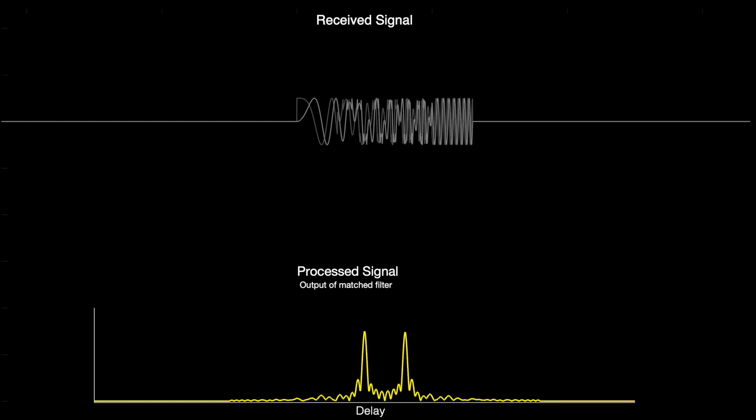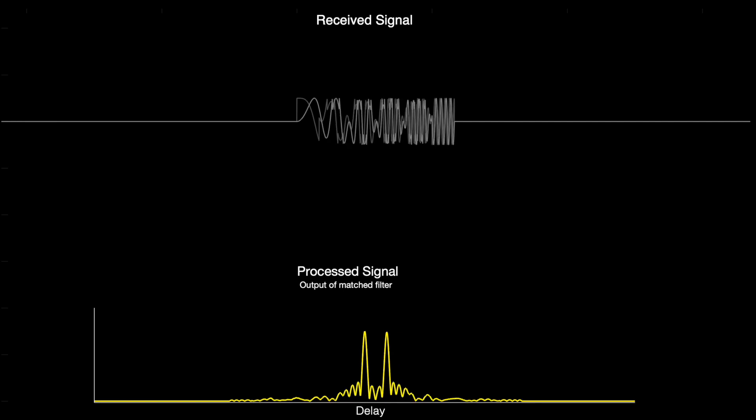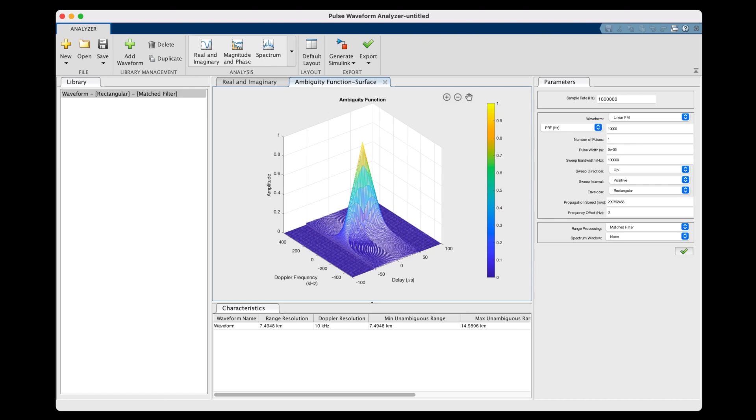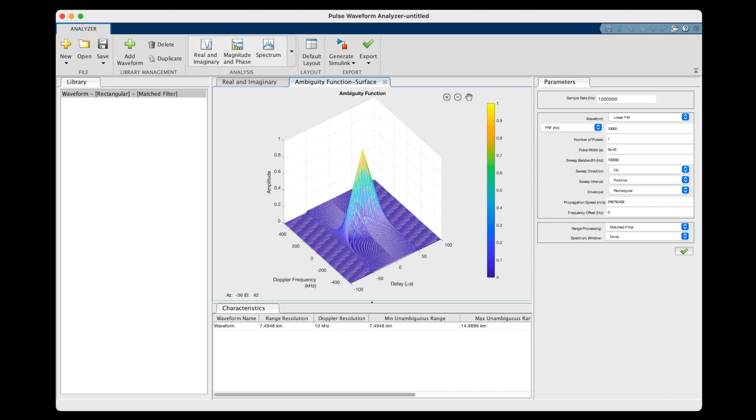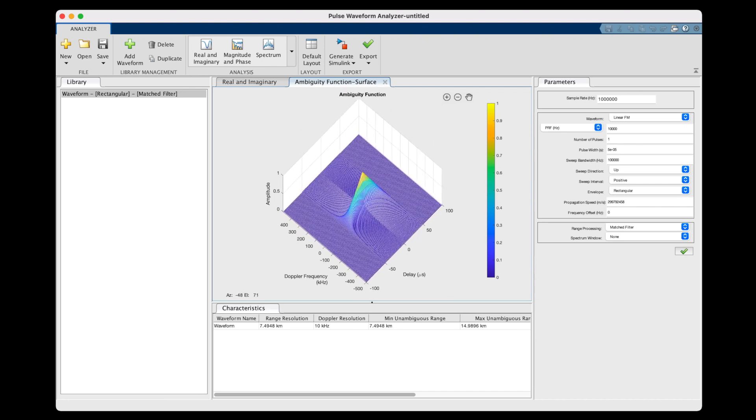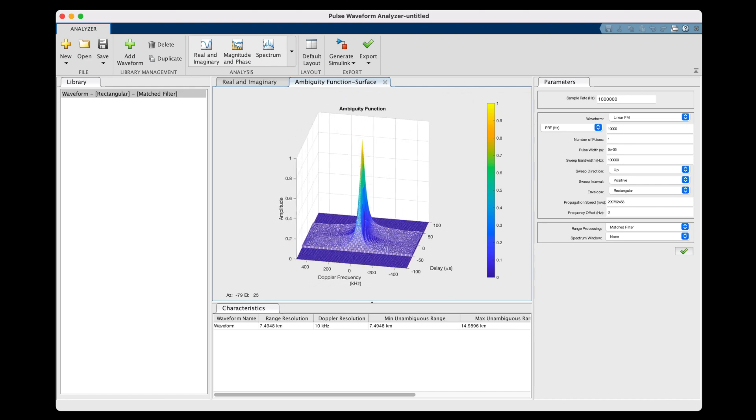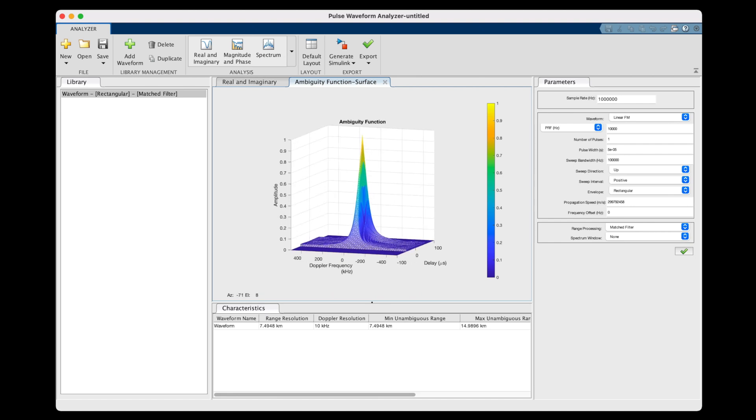Now, this is the good part of LFM waveforms, but there is something else that I need to explain about them. And that is that they generate a coupling between range and Doppler. And to understand this, we need to look at the ambiguity diagram, which I'm going to build up slowly. So hopefully it'll make a lot more sense by the time we get to it.